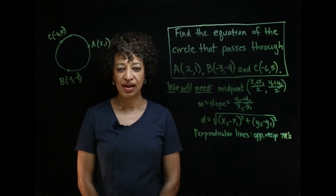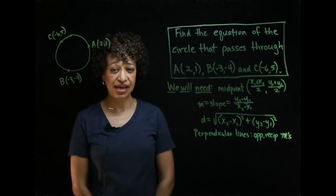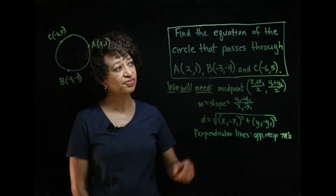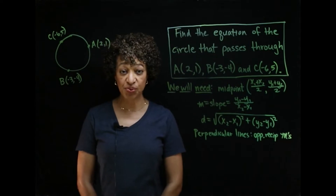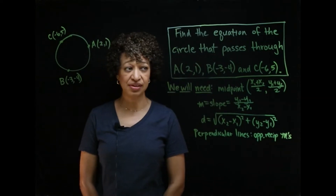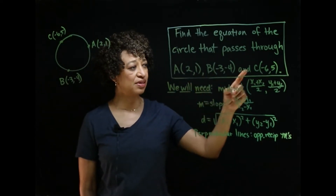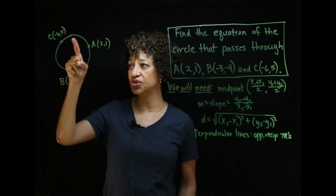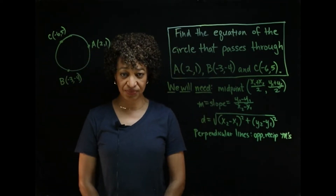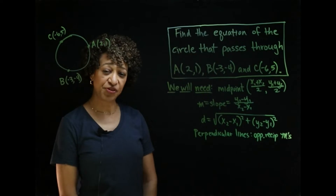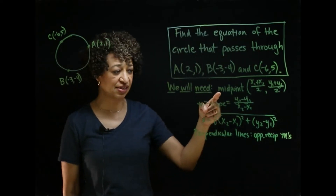Hi everybody. I have a common question that students ask me, and that is how to find the equation of the circle that passes through three points. So we have here three points that are on this circle and we want to find the equation of that circle. To start, we're going to need a few things from the past, and I've just listed them here.